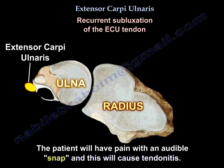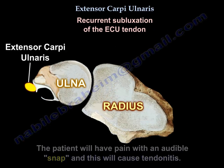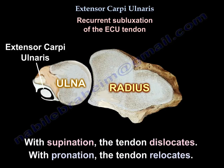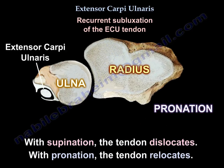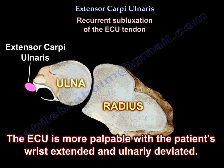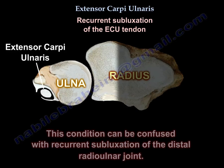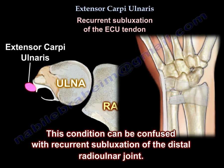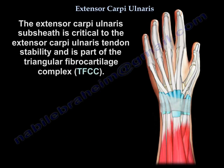The patient will have pain with an audible snap, and this will cause tendinitis. With supination the tendon dislocates, and with pronation the tendon relocates. When the tendon is subluxed, the extensor carpi ulnaris tendon becomes more palpable with the patient's wrist extended and ulnarly deviated. This condition can be confused with recurrent subluxation of the distal radioulnar joint.